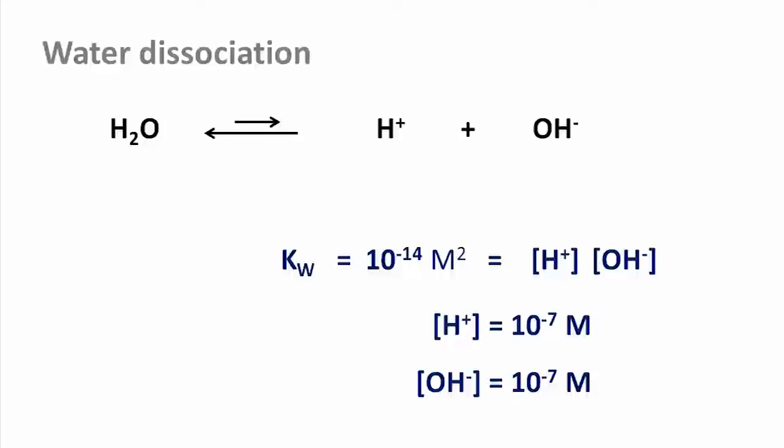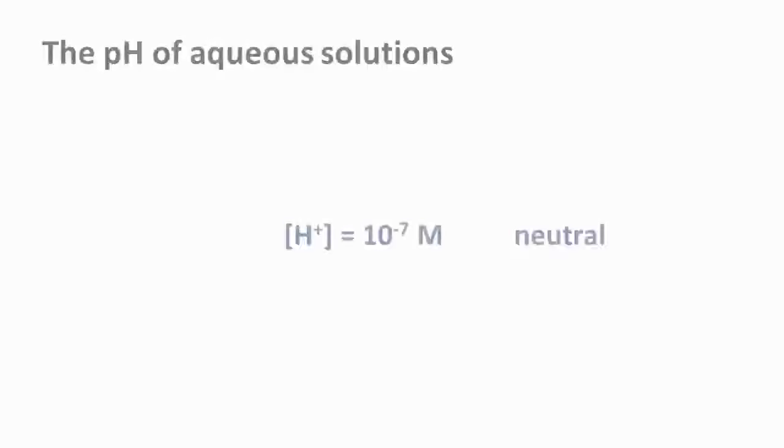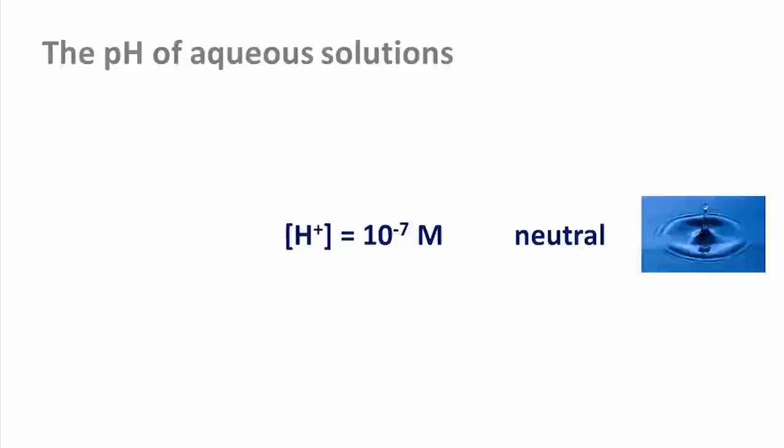This concentration of protons is very important for any chemistry happening in water. If that concentration is 10 to the minus 7, we say the solution is neutral, as is the case for ultra-pure water. Higher concentrations, say of 10 to the minus 3, mean the solution is acidic, and lower concentrations mean they are basic.